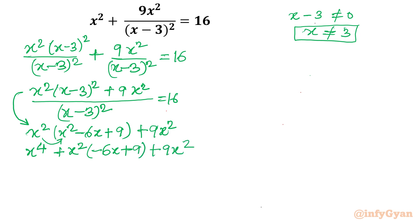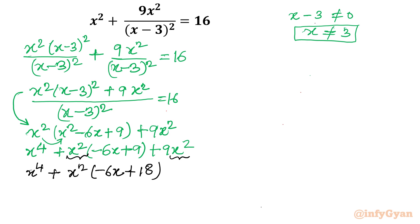From the second and third terms, x squared is common, so I take x squared as a common factor. This gives x power 4 plus x squared times (minus 6x plus 9 plus 9), which simplifies to x power 4 plus x squared times (minus 6x plus 18). In the next step I write the numerator as x power 4 minus 6x squared times (x minus 3).